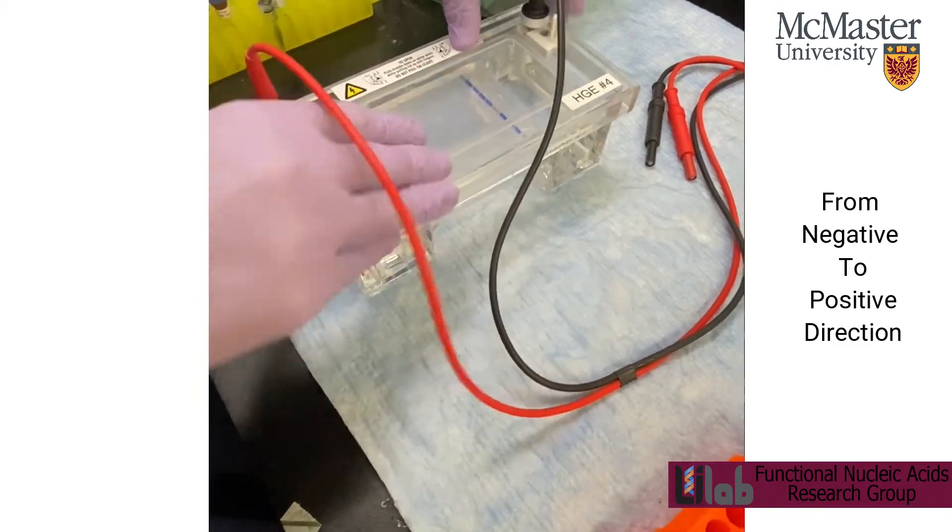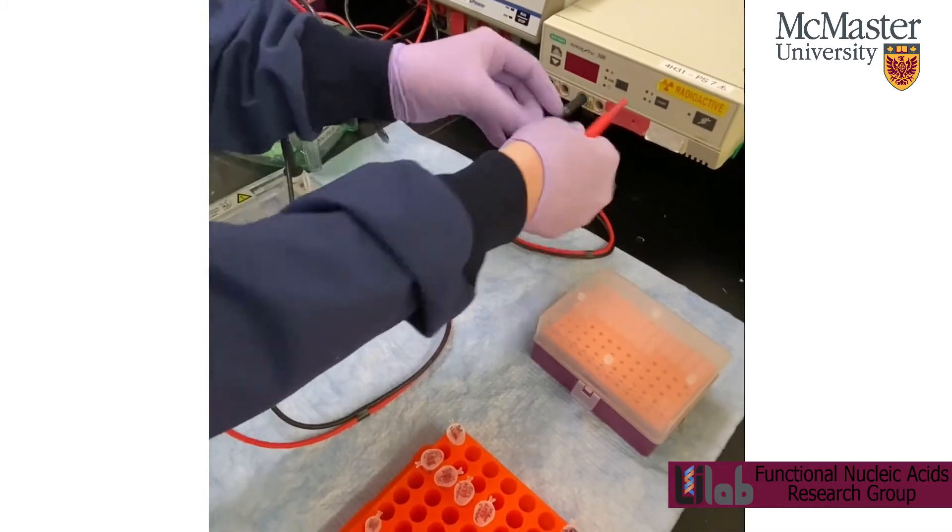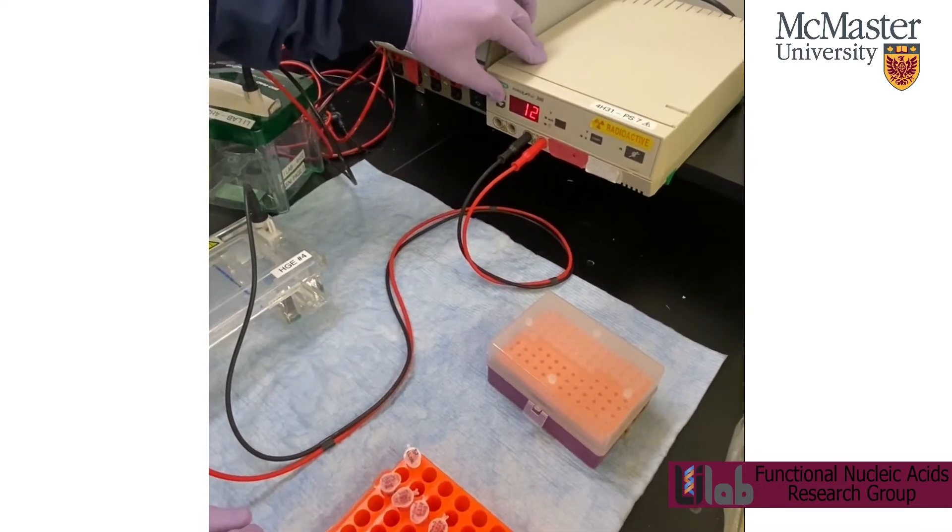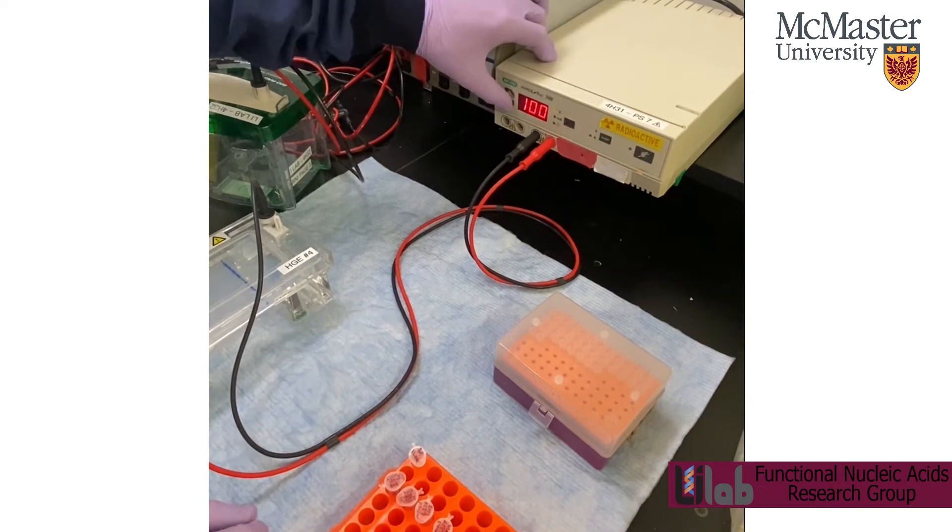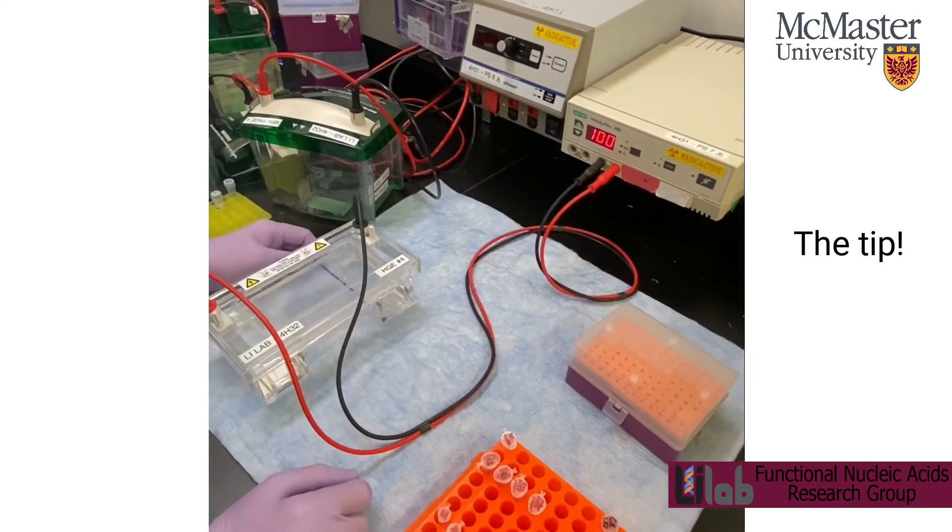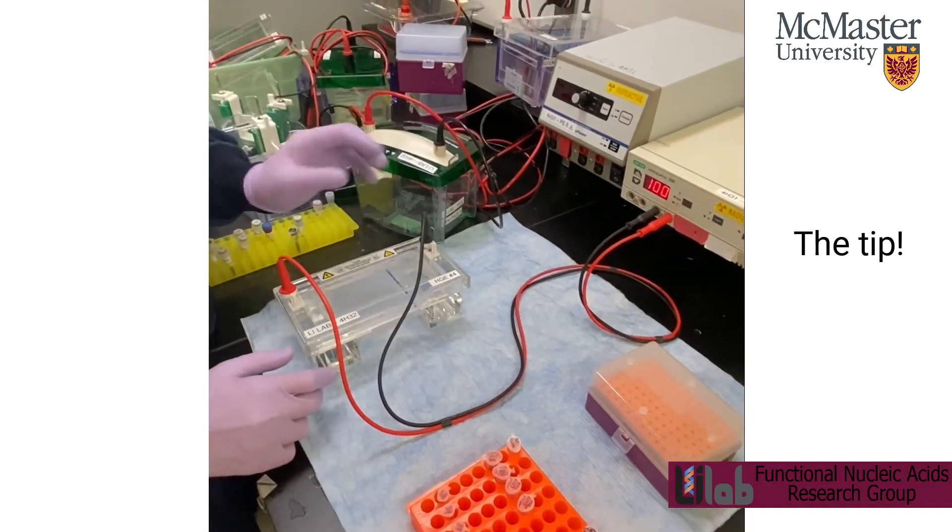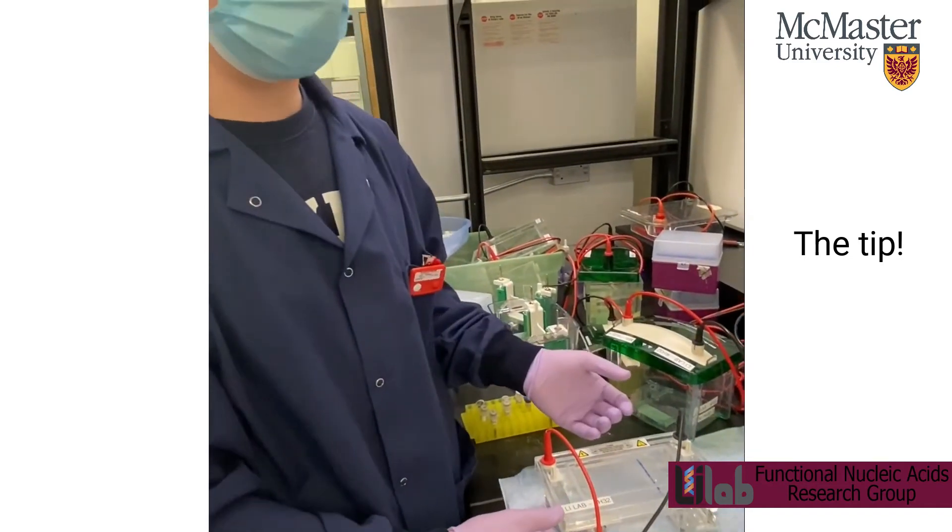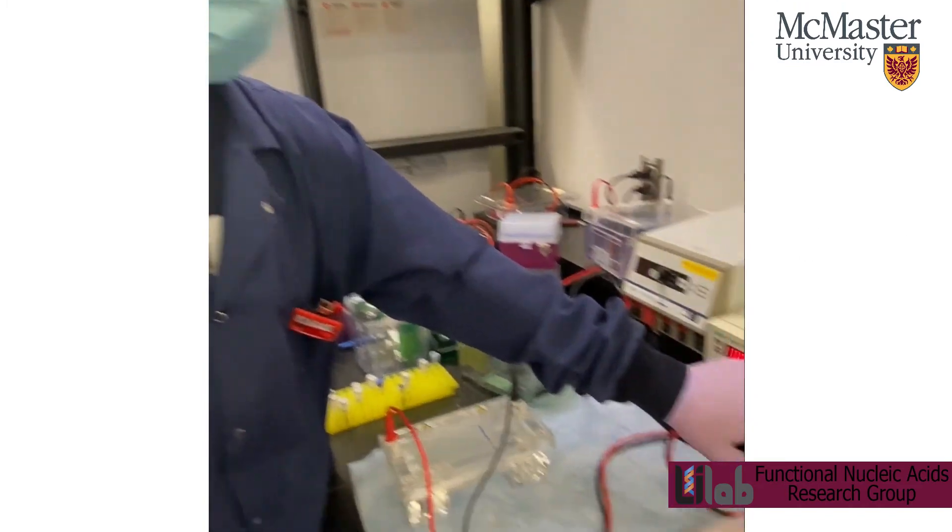So close the lid. And then plug the leads in. Make sure they're in all the way. And then I'm going to set the voltage to 100. Usually between 90 and 100 is a good range. The higher the voltage though, the hotter it's going to get. So you don't want your gel to melt in the apparatus. And then you can just run it.